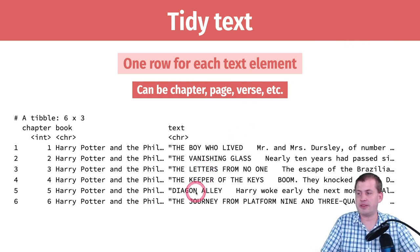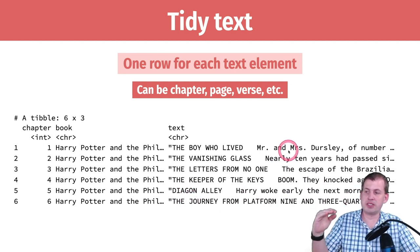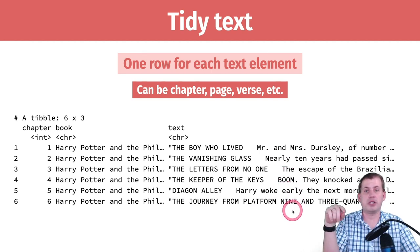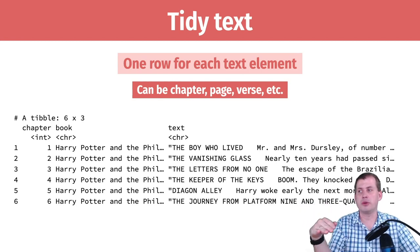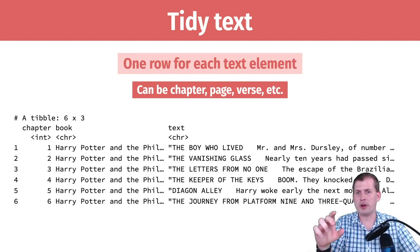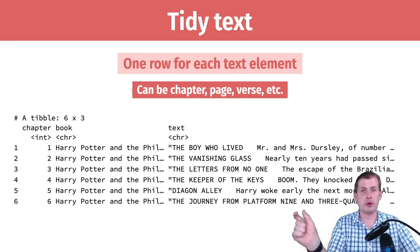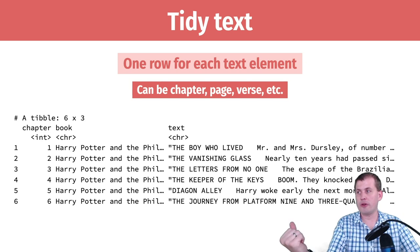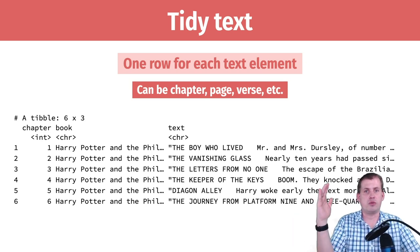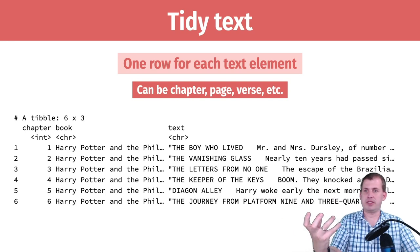Here's chapter one, two, three, five — he goes to Diagon Alley — chapter six, he goes from Platform Nine and Three Quarters to Hogwarts. But the text doesn't have to be divided by chapter. You can have a row for every page, every verse if you're doing poetry or texts like the Bible or the Quran, or even a row for every single word. Tidy text is essentially just a dataset that has a row for every element of your text, and it depends on what level of division you want.